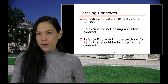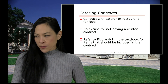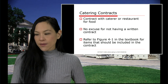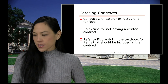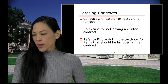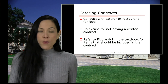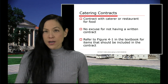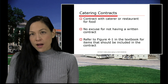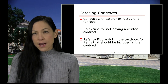Catering contracts — a contract with a caterer or restaurant for food. There's no excuse for not having it written in the contract; it must be in writing. Look at figure 4-1 in the textbook — these are the items that should be included in the contract. You will be doing an assignment regarding this, so be prepared to look it over and come to class with a draft of figure 4-1 to discuss with another person.